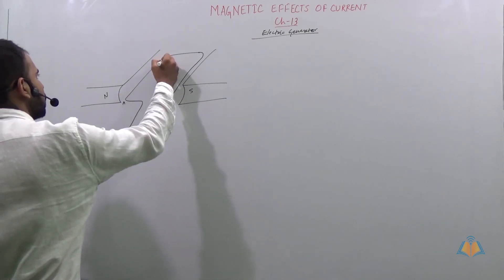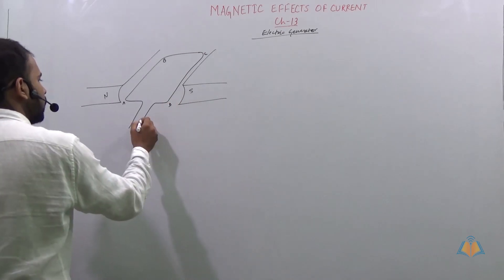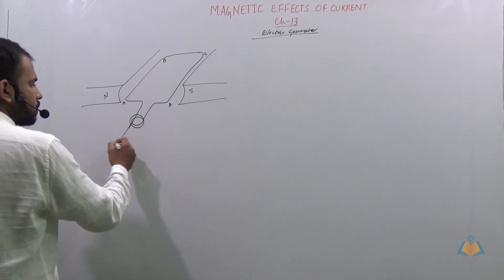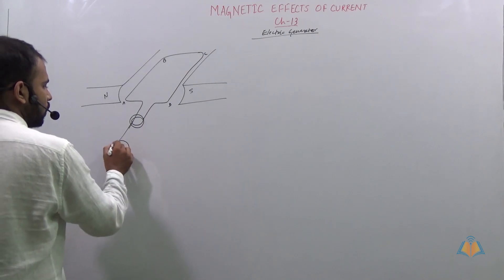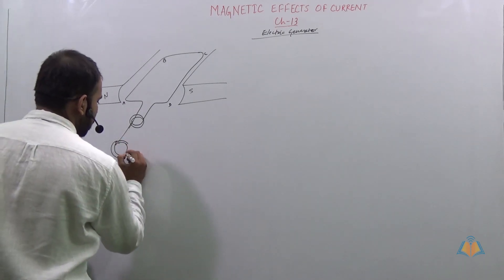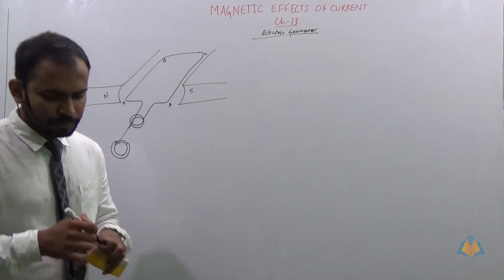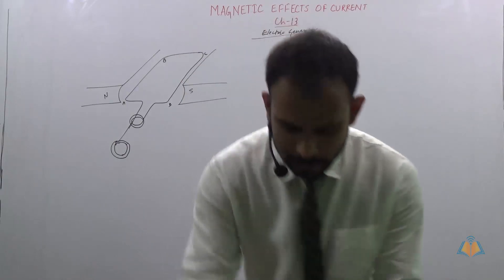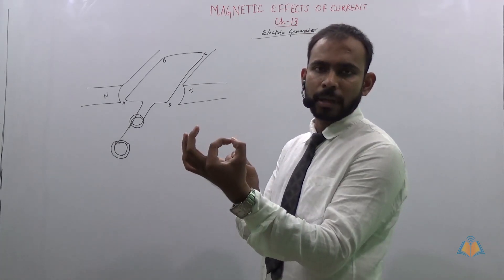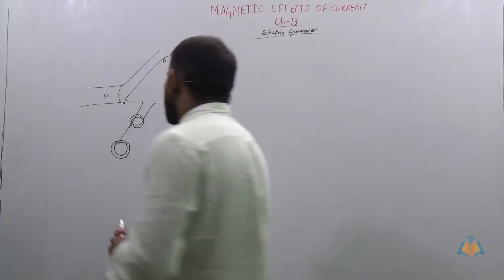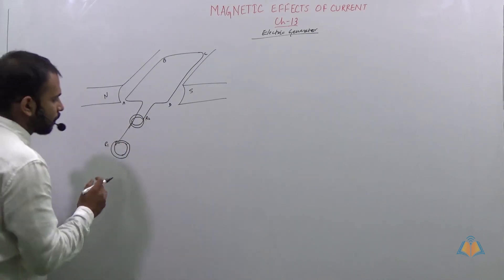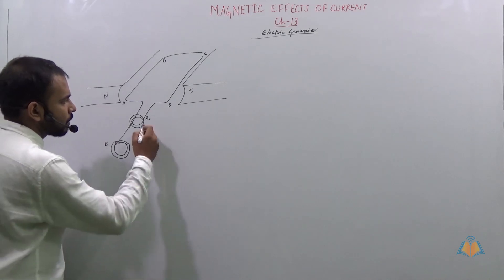We label the coil A, B, C, D such that this wire is moving inside this coil outwards. It is attached to slip rings — unlike the electric motor which used a split ring, here we use slip rings. The first slip ring and the second slip ring are labeled R1 and R2.